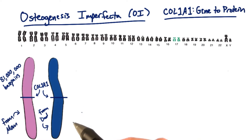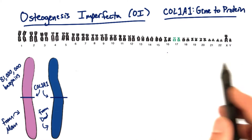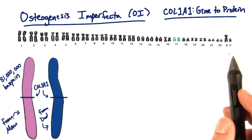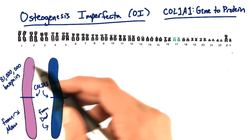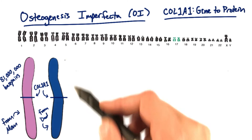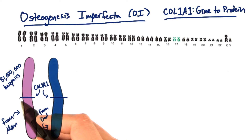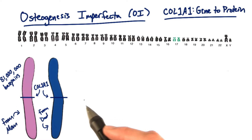The Col1A1 gene can be found on chromosome 17 in the human genome. Chromosome 17 is about 81 million base pairs long, and the Col1A1 gene can be found about halfway down.